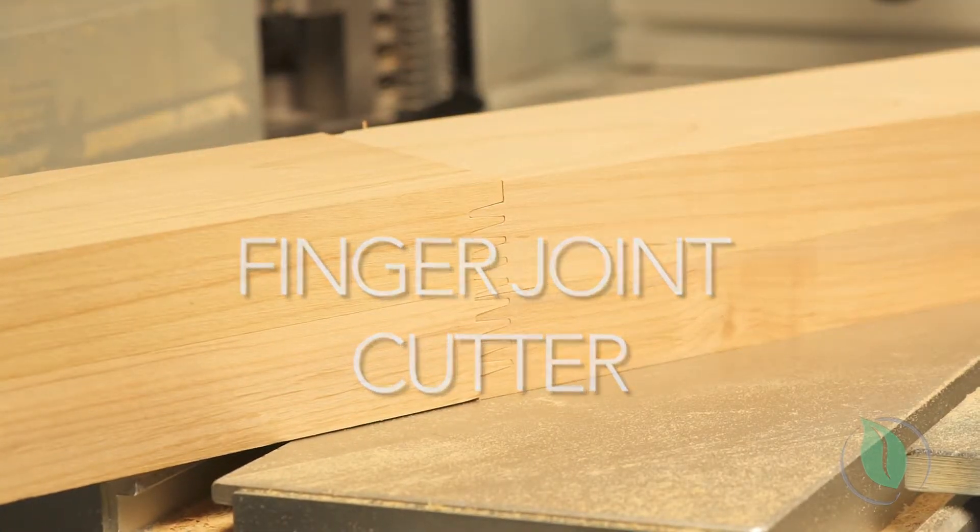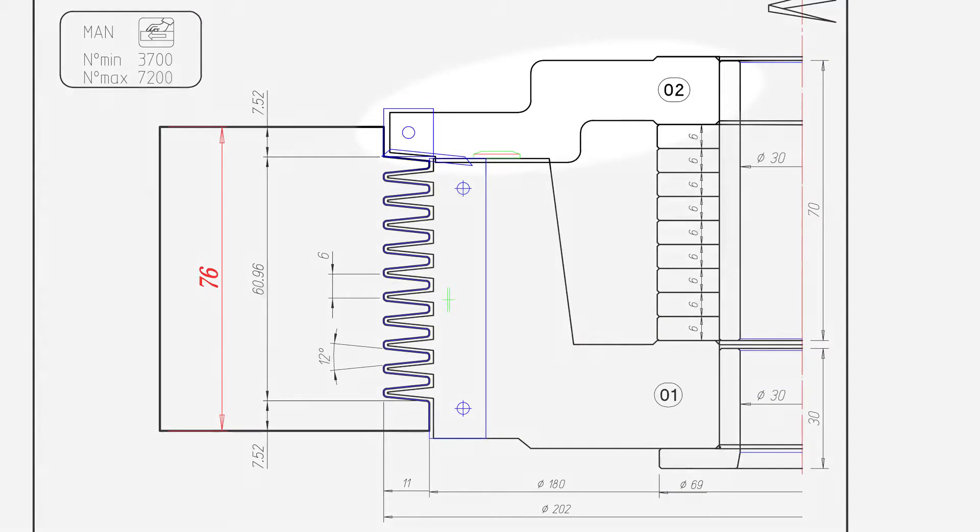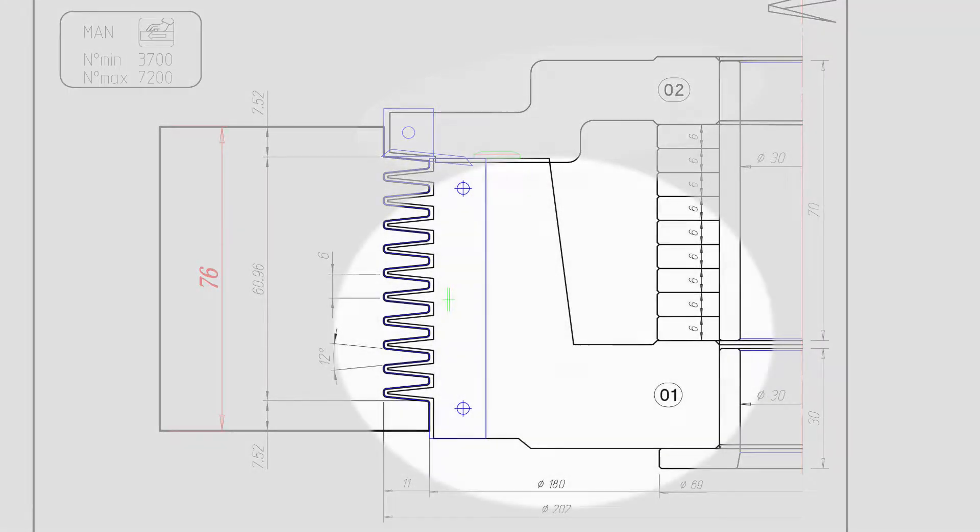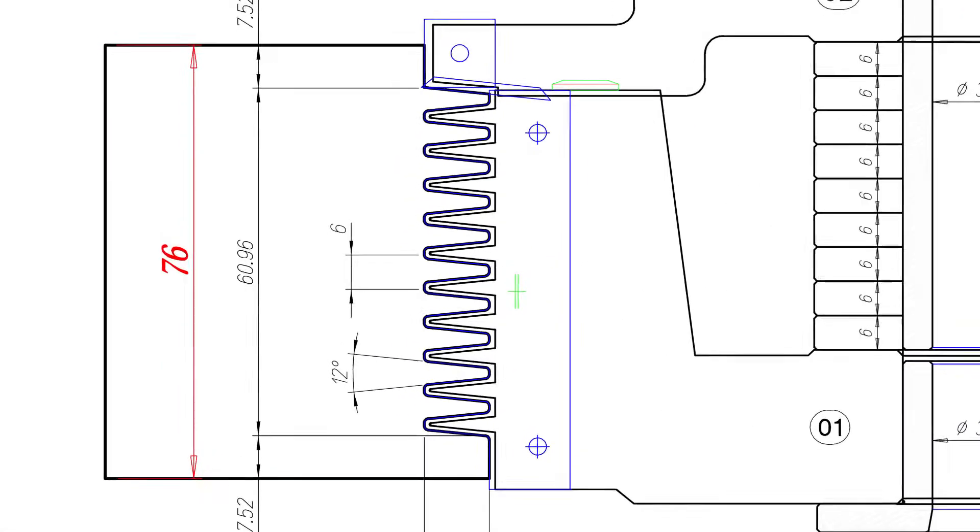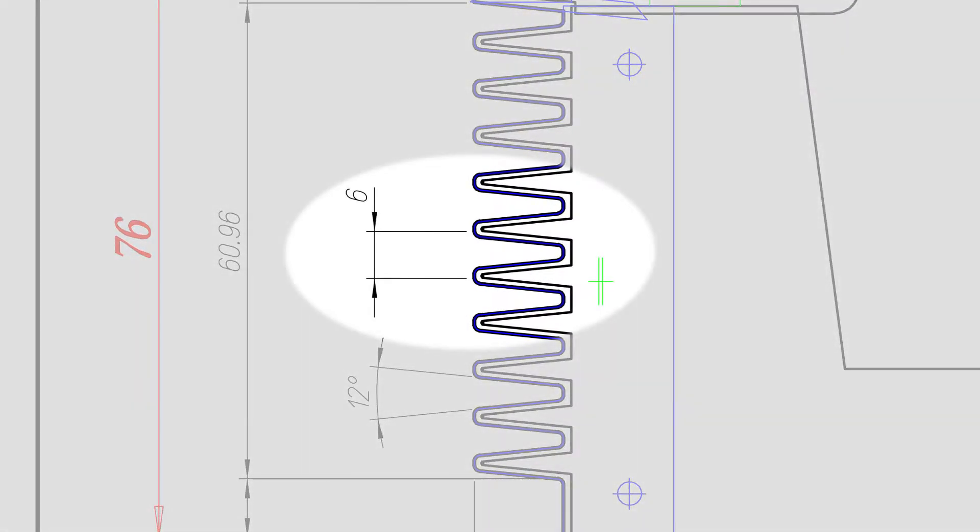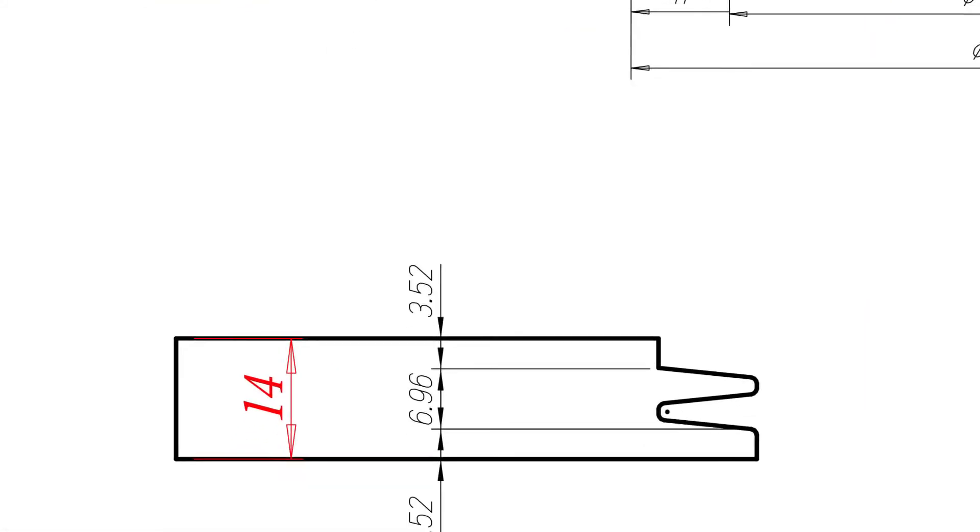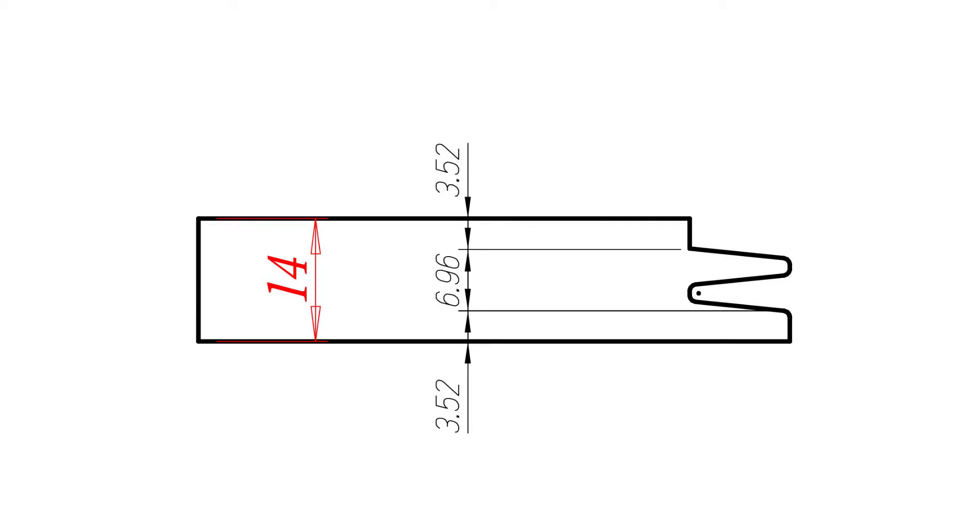The adjustable shoulder cutter on the top provides a nice clean joint at the face of the material. Our finger joint cutter is a two element assembly. You can see on the drawing that the fingers have a 6 millimeter pitch from each other. The minimum thickness dimension is specified at 14 millimeters.